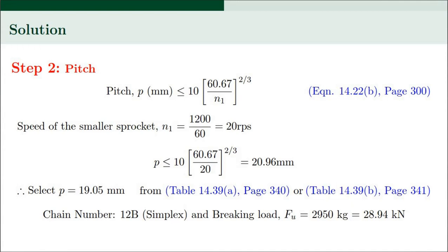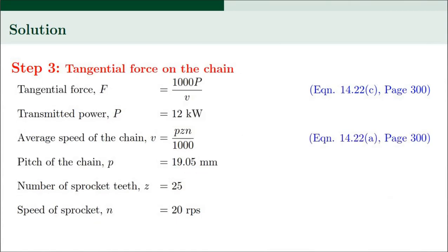From table 14.39A on page 340 or table 14.39B on page 341, we select a pitch equal to 19.05 mm. This corresponds to chain number 12B, simplex type, with a breaking load of 2950 kg, that is 28.94 kilo-Newtons.